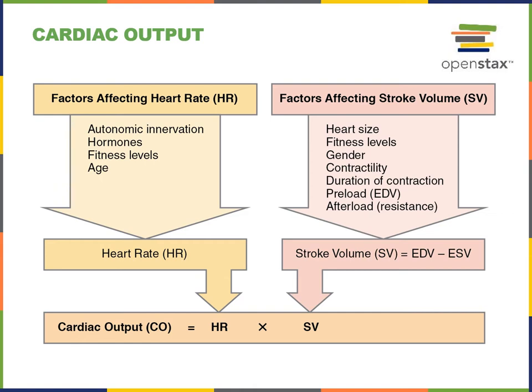In contrast to preload — the amount of stretching from the blood filling the ventricles — the afterload is the resistance or pressure of the arteries that makes it more difficult for blood to move out of the ventricles during ventricular ejection. As afterload increases, this leads to a decreasing stroke volume by increasing the end systolic volume. This is one of the ways that as we age, or as arteries become less elastic and hardened, the afterload increases, leading to a proportionally decreased stroke volume.